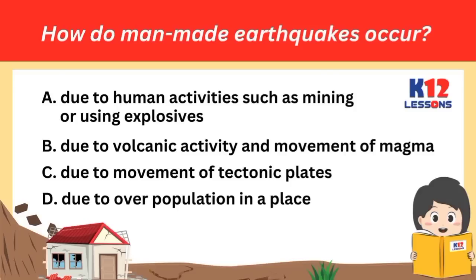How do man-made earthquakes occur? A. Due to human activities such as mining or using explosives. B. Due to volcanic activity and movement of magma. C. Due to movement of tectonic plates. D. Due to overpopulation in a place.